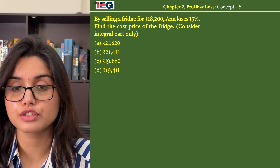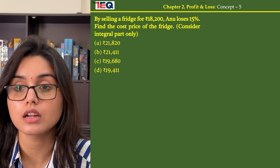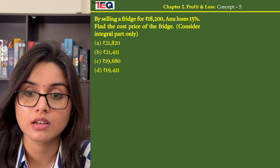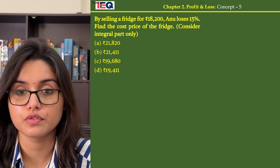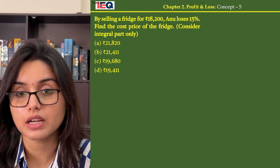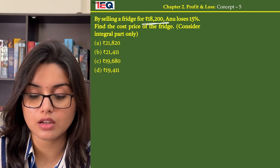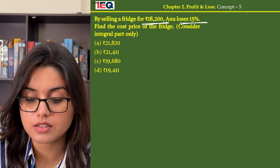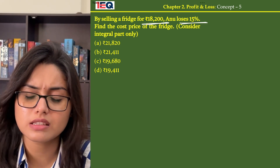By selling a fridge for ₹18,200, Annu loses 15%. Find the cost price of the fridge. The selling price is given as ₹18,200 and the loss incurred is 15%.